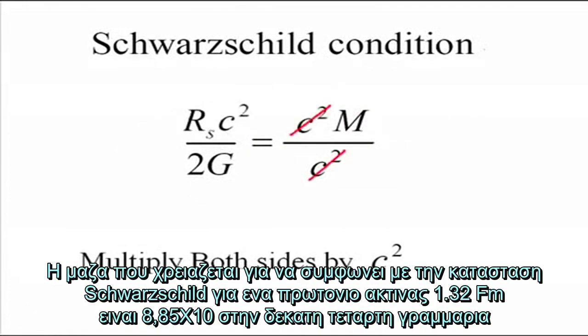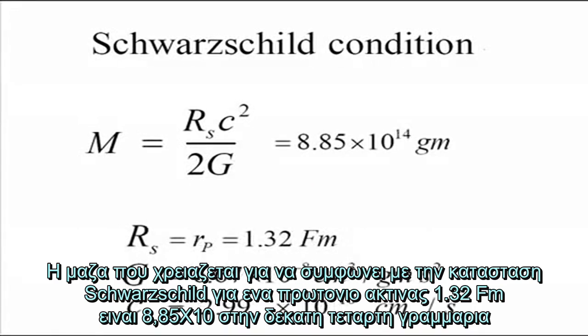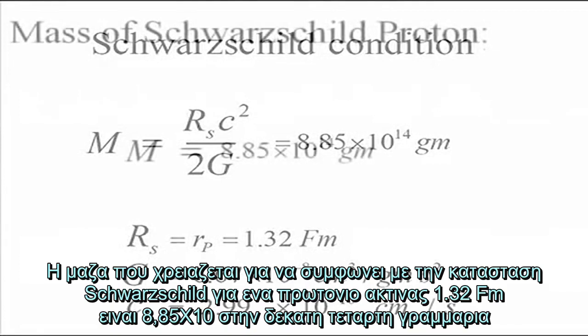The mass needed to obey the Schwarzschild condition for a proton radius of 1.32 femtometers is 8.85 times 10 to the 14th grams.